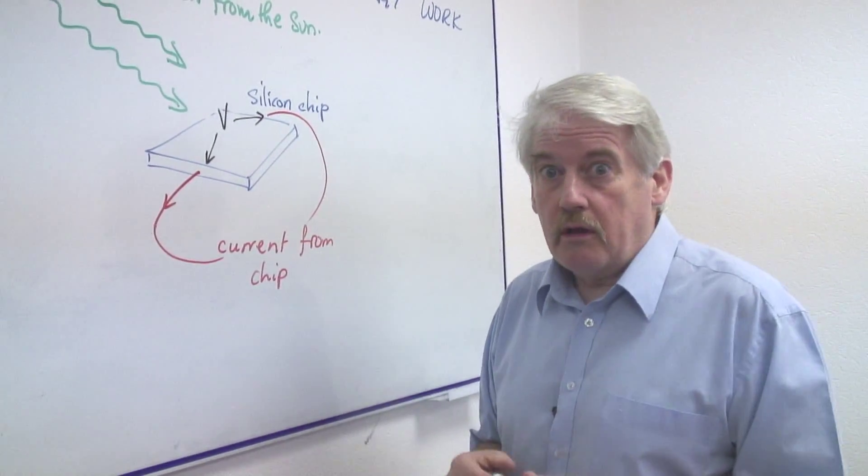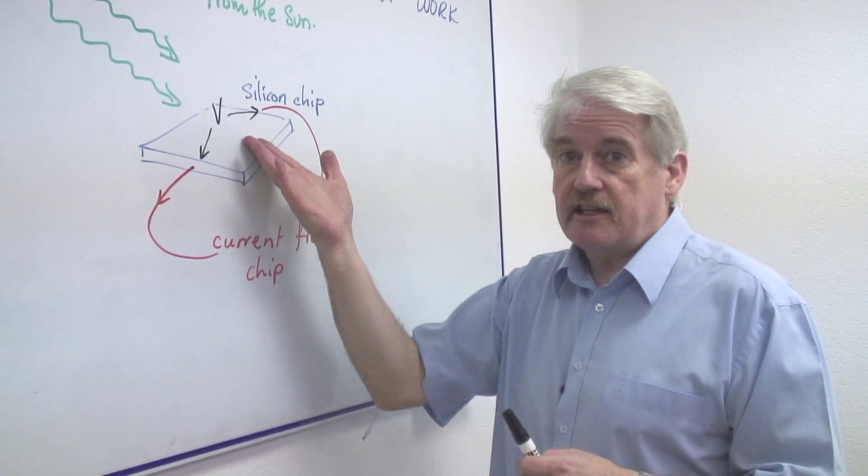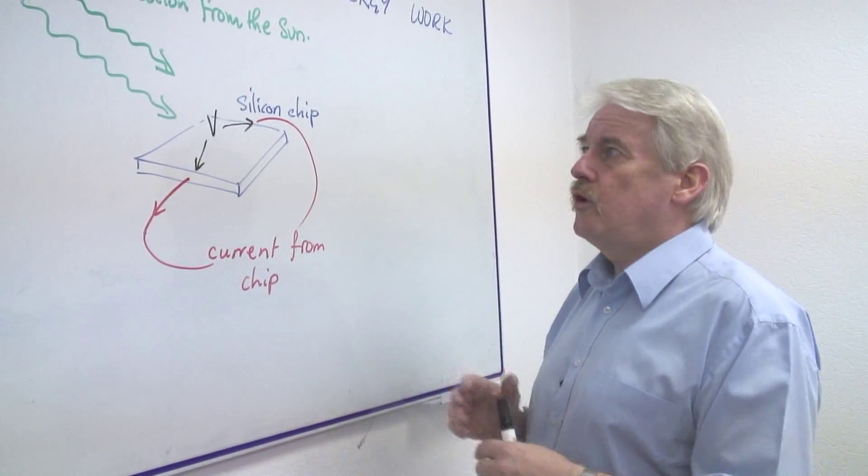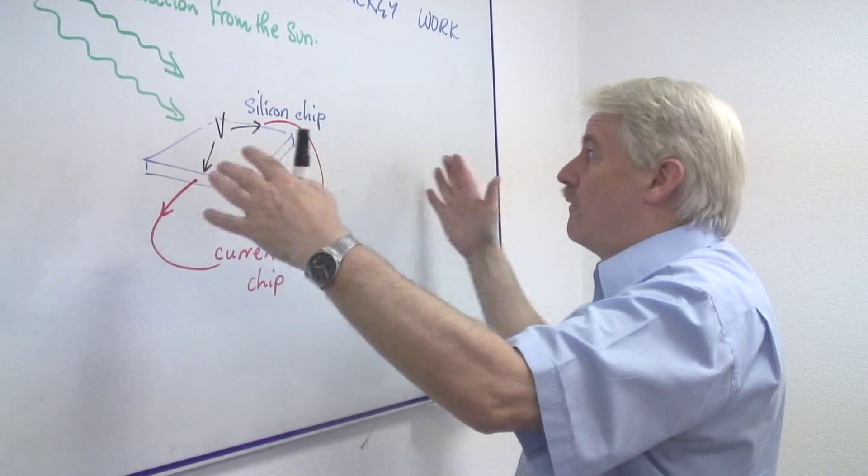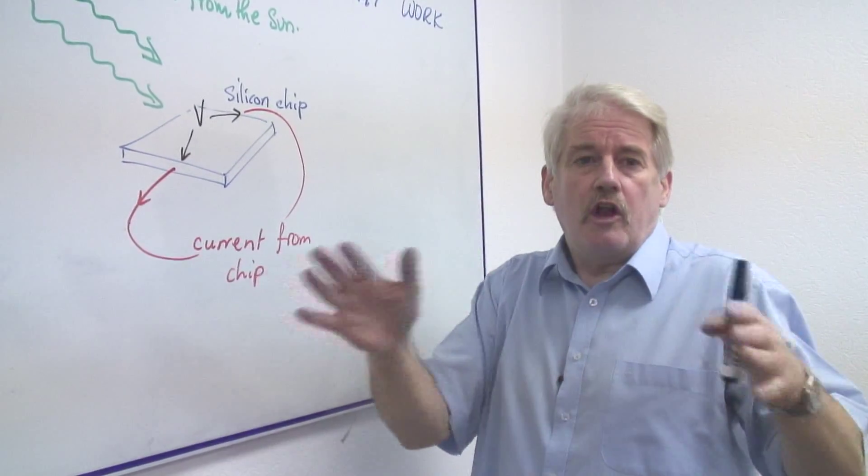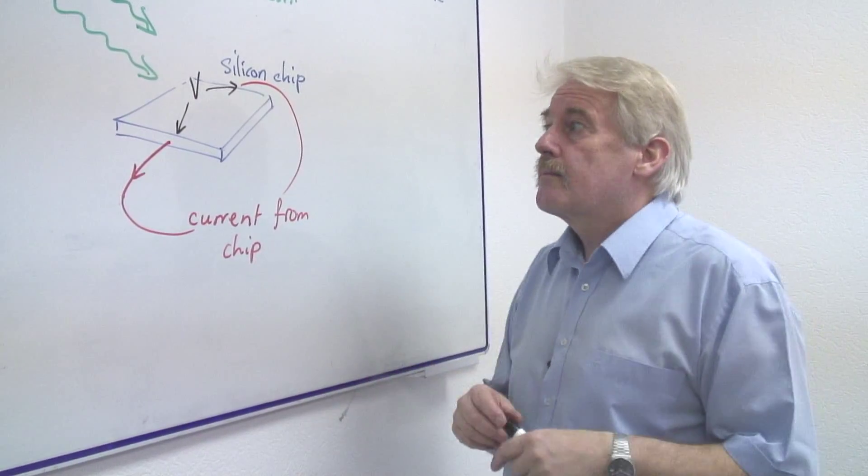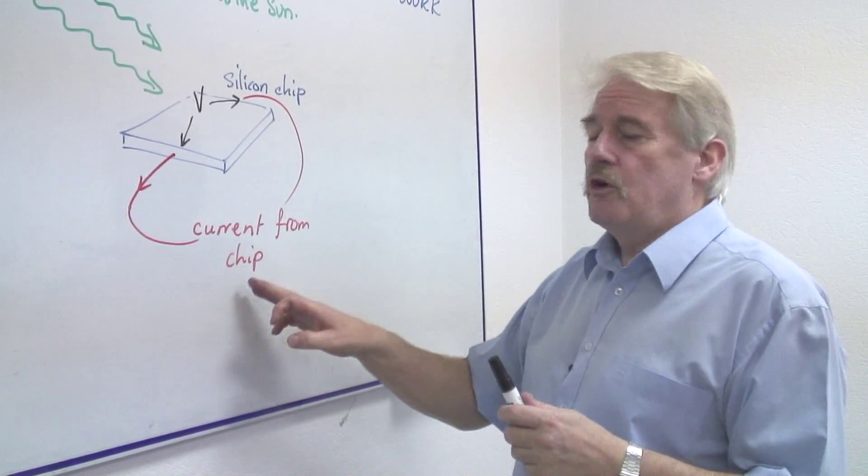Now this is quite small so you need quite a big silicon chip or a lot of silicon chips. And when you look at a solar array, as they call it, you will see it is made up of lots and lots of small silicon plates. Each of them produces a small current.